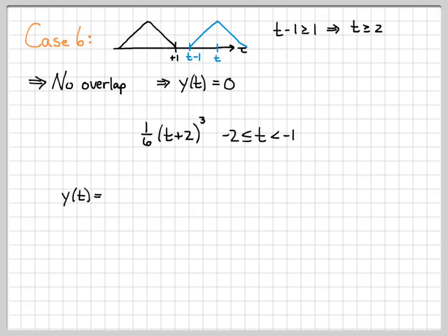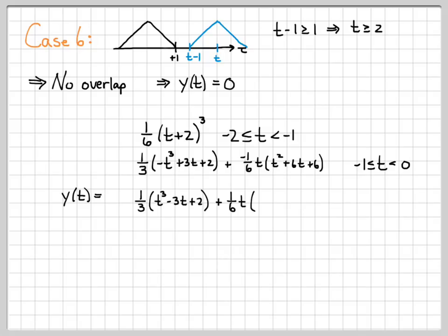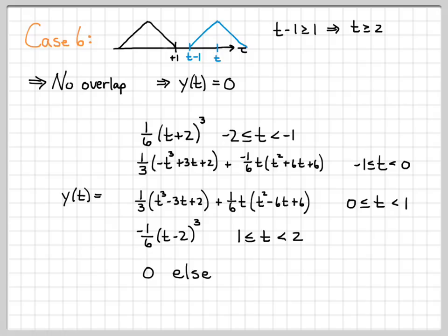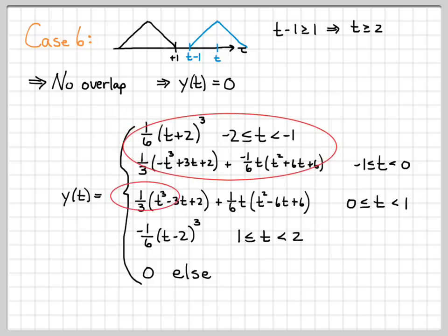Putting it all together: y of t equals one sixth times (t+2)³ for t between minus two and minus one; the case three expression for t between minus one and zero; the case four expression for t between zero and one; the case five expression for t between one and two; and zero everywhere else. We've worked through this convolution of two triangles in a very methodical case-by-case way. Since we were dealing with even functions, symmetry could have been exploited to halve the computation, but we worked it out the long way for this example.